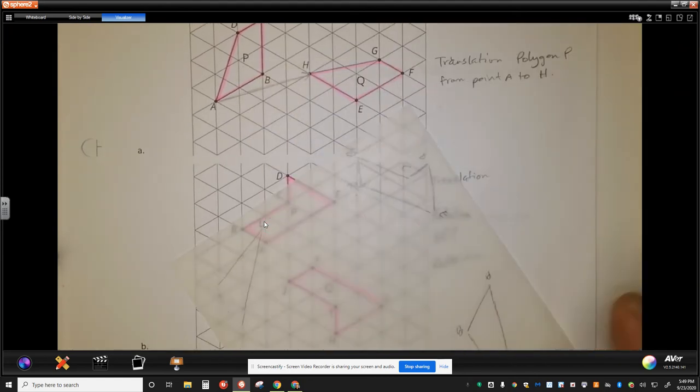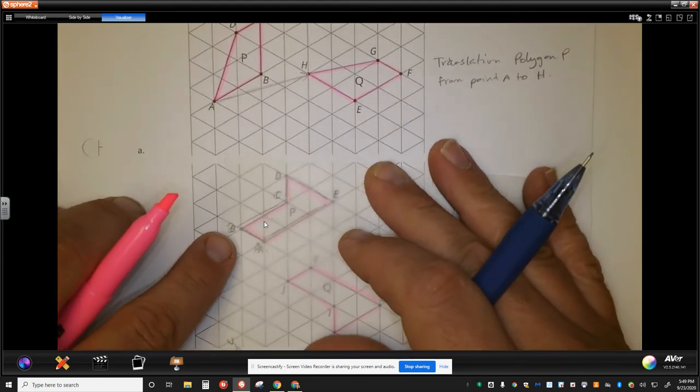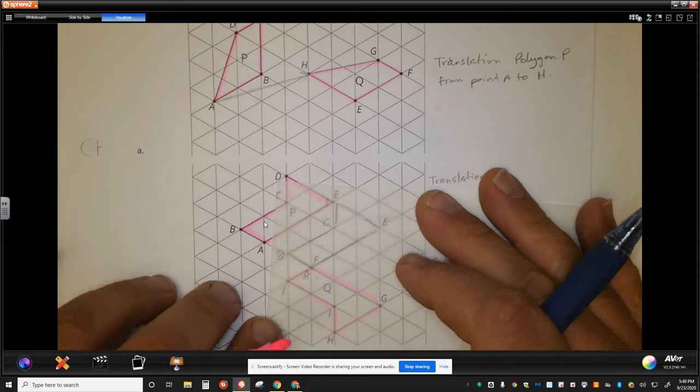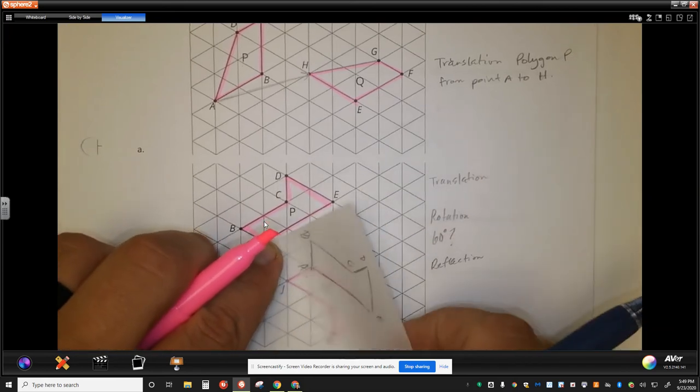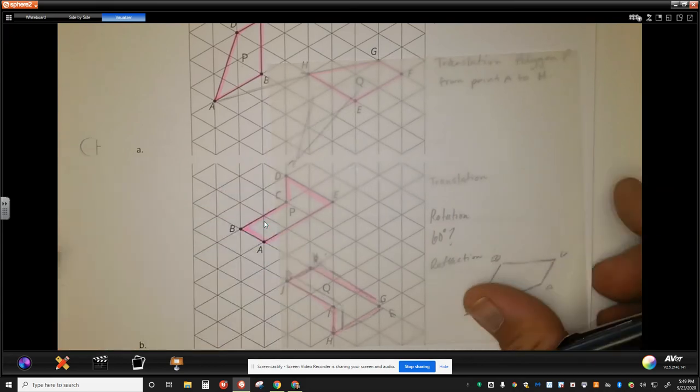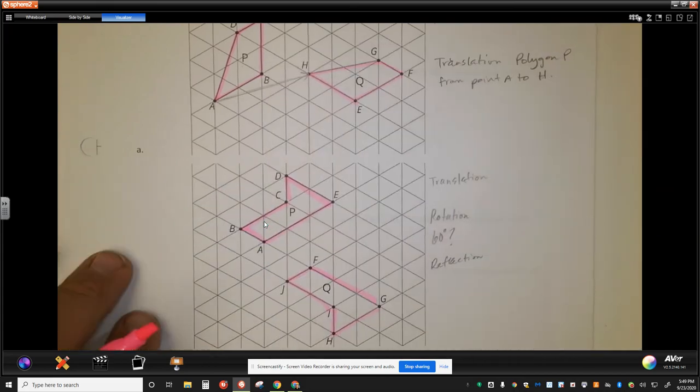Rotate around a specific point. Perhaps you want to say, you know what, I know that A and F are together. So I'm going to go and translate here. Then I'm going to rotate a certain number of degrees. And then I'm going to reflect. Find whichever one works the best for you.